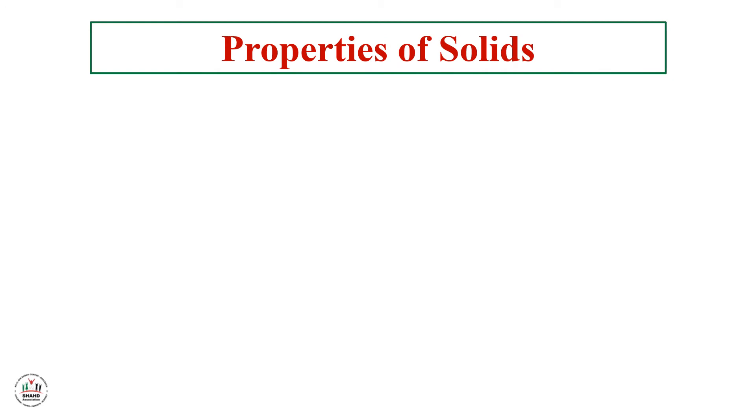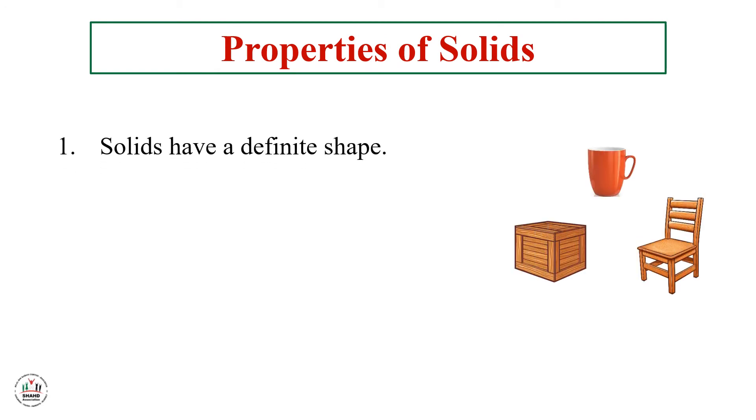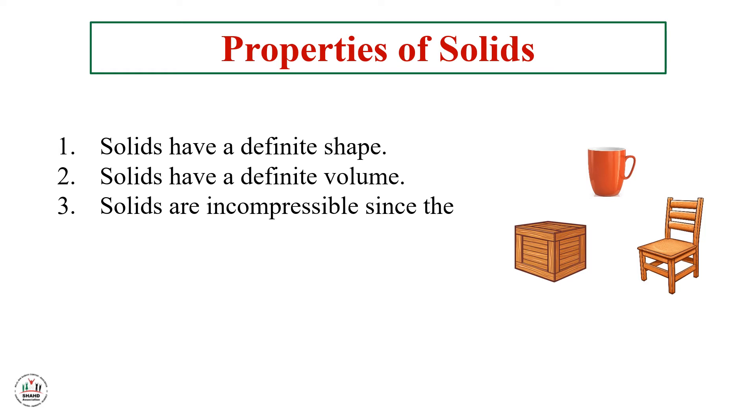What are the properties of solids? Solids have definite shape. As you can see in the picture, we have a chair, cup, and box - each has a different shape. Wherever we put them, they will keep their shape. Solids have definite volume. Third, solids are incompressible since the particles are tightly stacked. Because the particles are tightly packed together with no space between them, all solid bodies cannot be compressed.